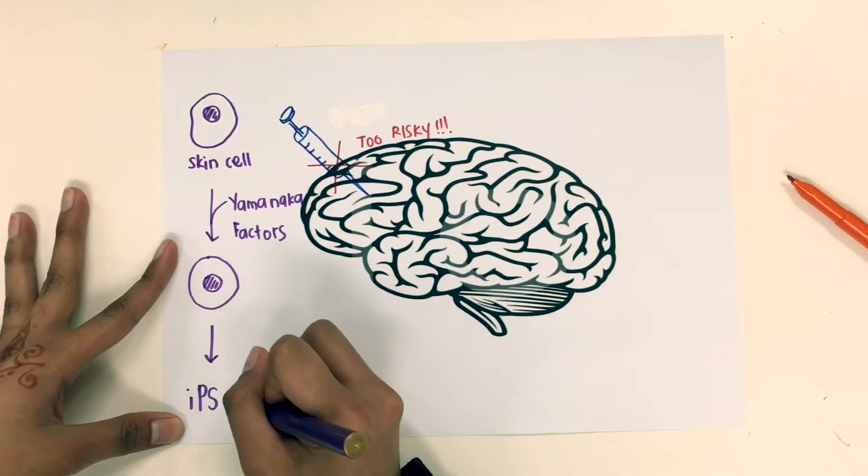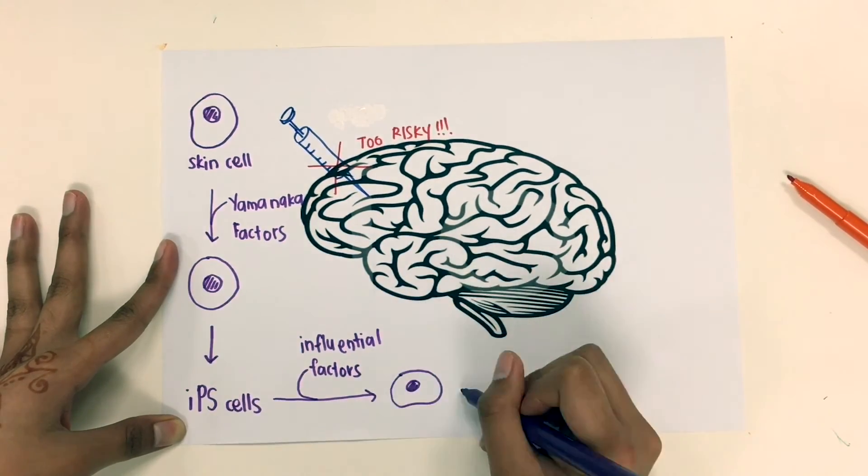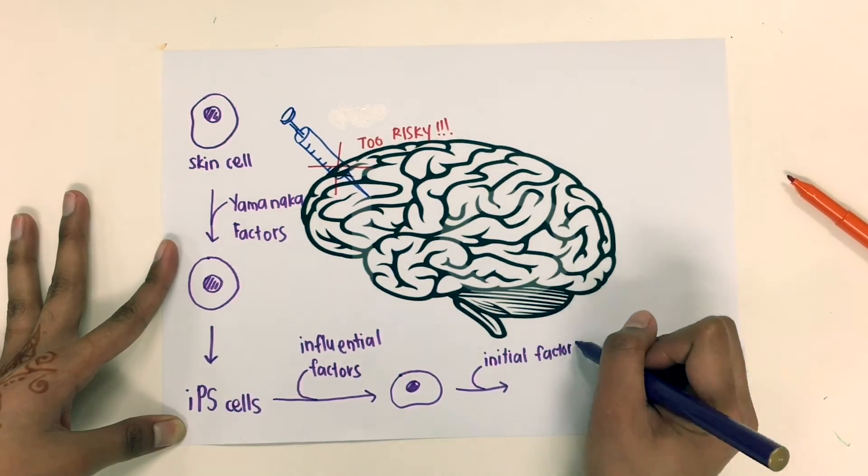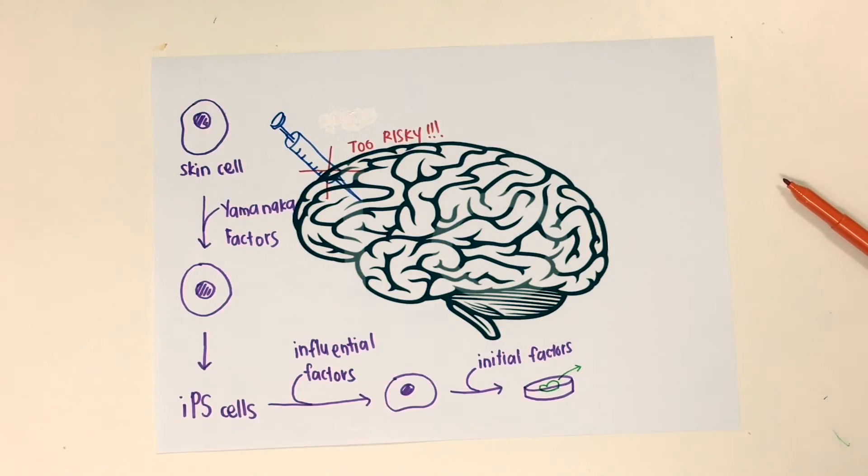Subsequently, differentiation factors and initial factors are added to direct the formation of brain organoid. Brain organoid is a small brain-like structure that contains the same DNA as the donor's or the patient's neuron cells.